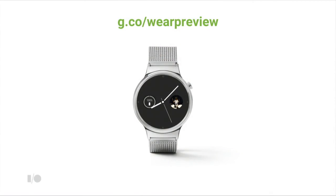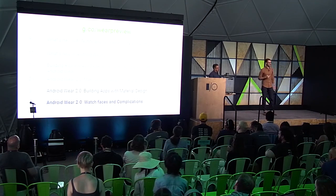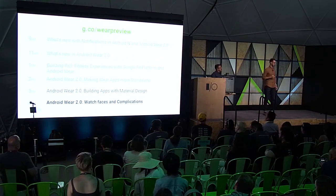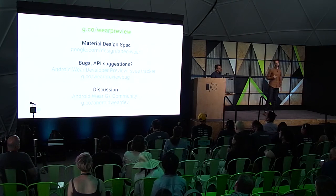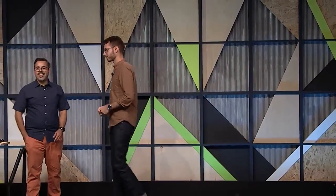Thank you for attending this session. We hope you enjoyed it and learned not only how to design and build wearable apps, but also why the design decisions we made are practical for small and varied form factors. You can start building apps today by going to g.co/wear-preview. The next session in this room is on watch faces and complications, and missed sessions will be available on YouTube shortly. Please use the wearable preview and submit any API suggestions or bug reports at g.co/wear-preview-bug.